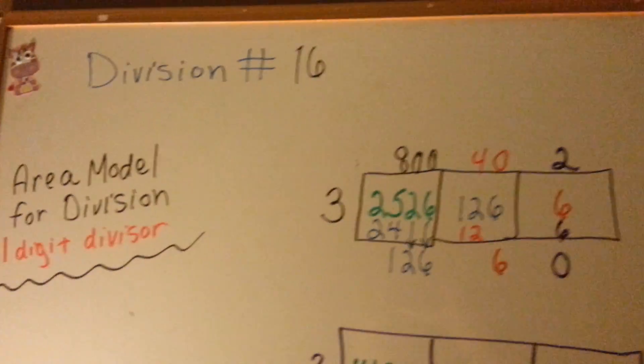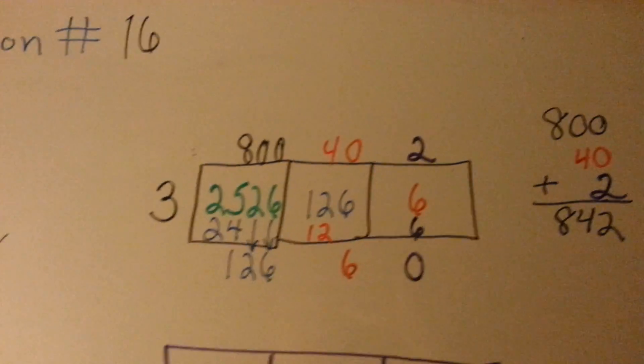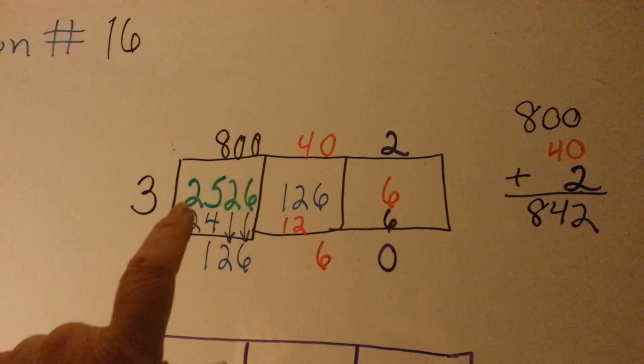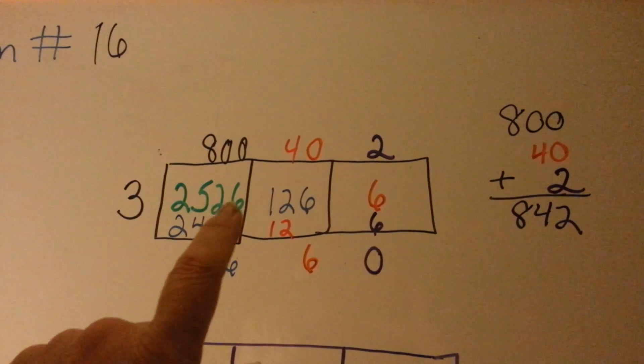Alright, I'm going to take a look at and show you one that's finished. What you do is you have boxes, and we're putting 3 into 2,526.